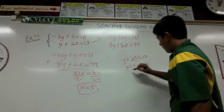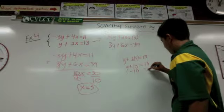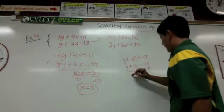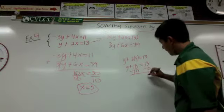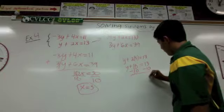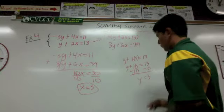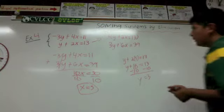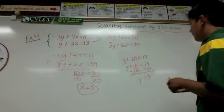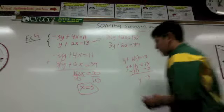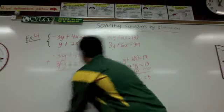So y plus 10 equals 13. Subtract 10 from both sides and they cancel out, giving us y equals 3. Now we're going to check our solutions.